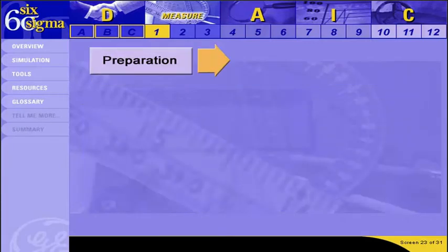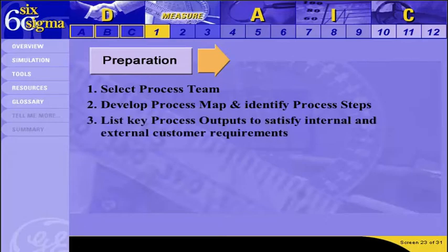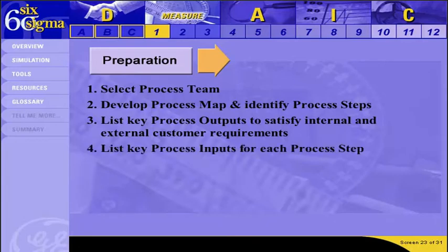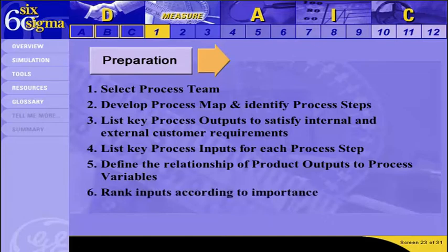FMEA completion begins with preparation. First, you must select a process team. The team then develops a process map and identifies the process steps, which helps to define the scope of the FMEA. Next, list the key process outputs necessary to satisfy internal and external customer requirements, which helps to determine what is and is not a failure mode. Then list the key process inputs for each process step, and define the relationships of the product outputs to process variables. Finally, rank the inputs according to importance in order to determine the severity of the risk.